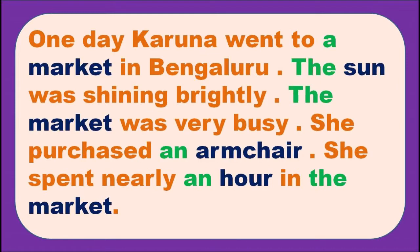The Sun — it is a natural thing, only one, that is why we use 'the.' For 'market': the first time we use the word market, we use 'a market.' When we are talking about the same market again, we use 'the market.' For 'an armchair': the word armchair starts with a vowel sound. Same with 'an hour' — here H is silent, so the word starts with a vowel sound.